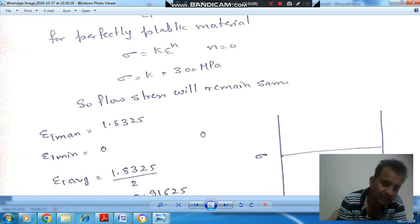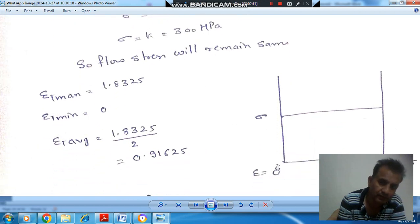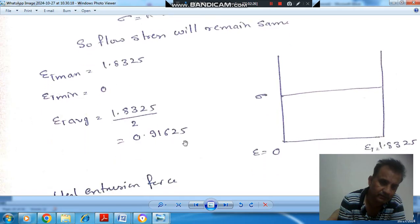When we just start forming, the strain is 0 and when we complete the forming, the strain is 1.8325. So it is irrespective of stress. The average of these two will be 0.91625.